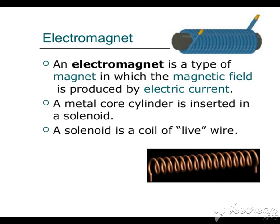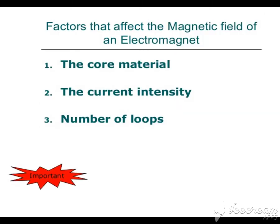An electromagnet is a type of magnet in which the magnetic field is produced by electric current. A metal core cylinder is inserted in a solenoid, which is a coil of live wire. The factors that affect the magnetic field of an electromagnet are core material, current intensity, and number of loops.